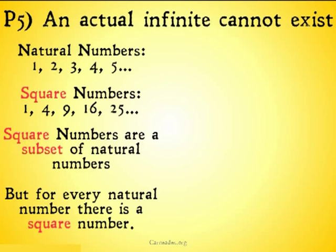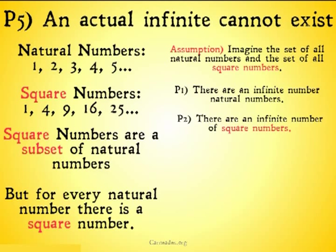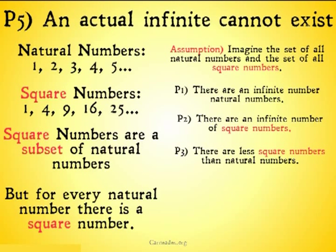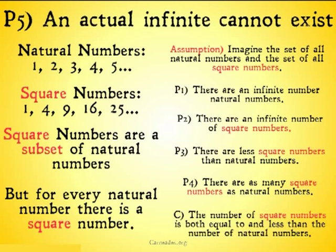However, for every natural number there has to be a square number, because the only way you get a square number is by multiplying some natural number by itself. So it seems we're going to run into a similar problem that Craig did. Let's take a look at a very similar argument. Assume we imagine a set of all natural numbers and a set of all square numbers. P1, there are an infinite number of natural numbers. P2, there are an infinite number of square numbers. P3, there are less square numbers than natural numbers, because square numbers are a subset of natural numbers. P4, there are as many square numbers as natural numbers, because the only way you can get a square number is by multiplying a natural number by itself. And finally, the number of square numbers is both equal to and less than the number of natural numbers.